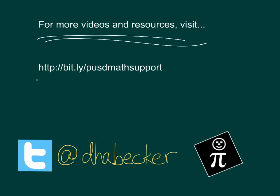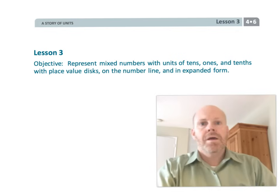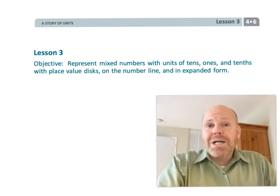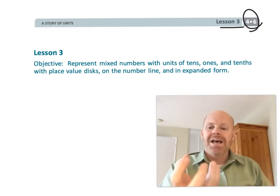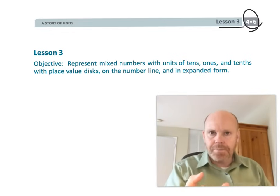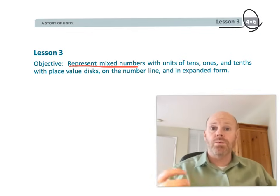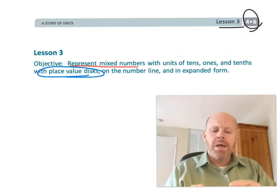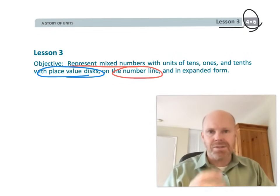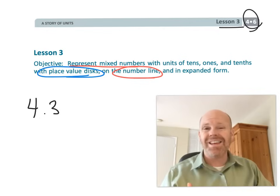This is fourth grade module 6 lesson 3. In this lesson, students are going to be experiencing the idea of mixed numbers in a variety of different representations. They'll be looking at decimals specifically — like 4.3 — with place value disks and on a number line.